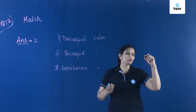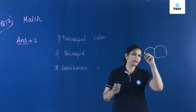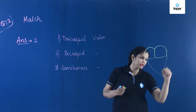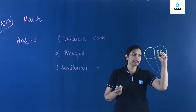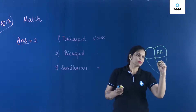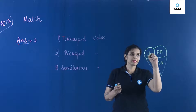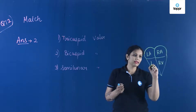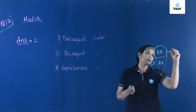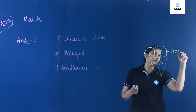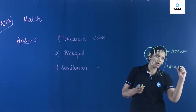As we all know in the structure of the heart, there are four chambers: right atrium, right ventricle, left atrium and left ventricle. So there are two atria and two ventricles present in the heart.